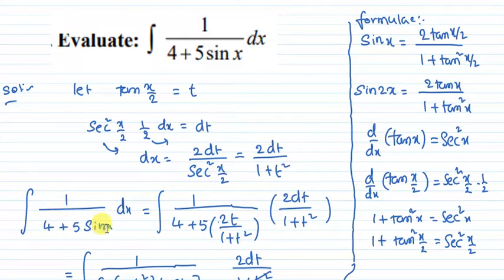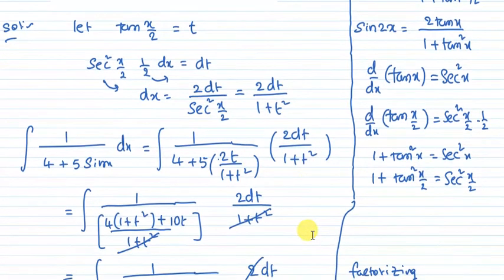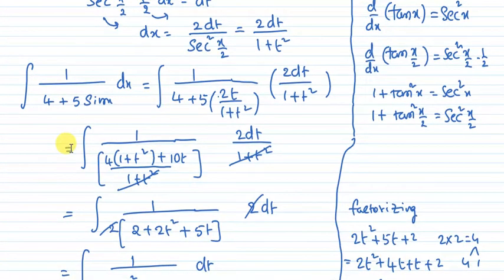The problem is: integral 1 by 4 plus 5 sin x dx equals integral 1 divided by 4 plus 5 times 2 tan x by 2 by 1 plus tan square x by 2. Since tan x by 2 equals t, this becomes 2t by 1 plus t square. And dx becomes 2dt by 1 plus t square. The 1 plus t square cancels.